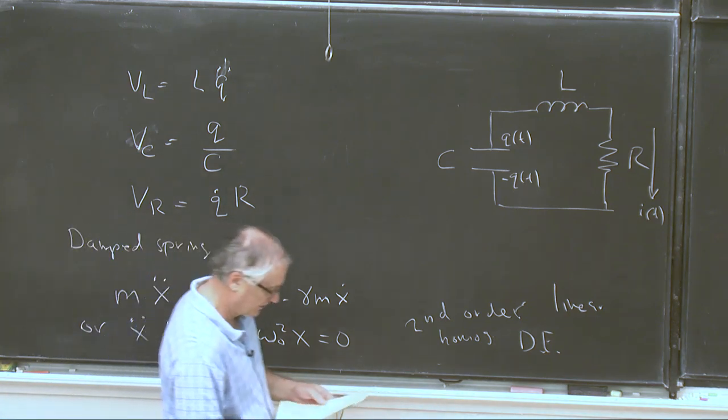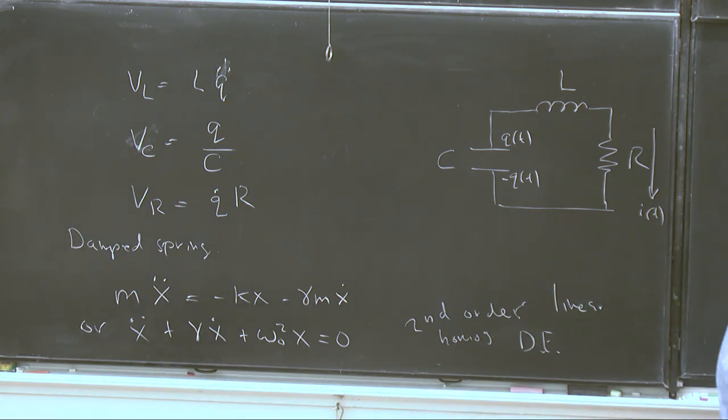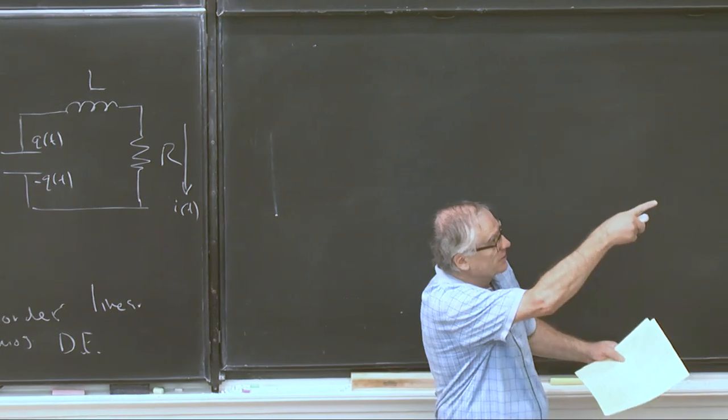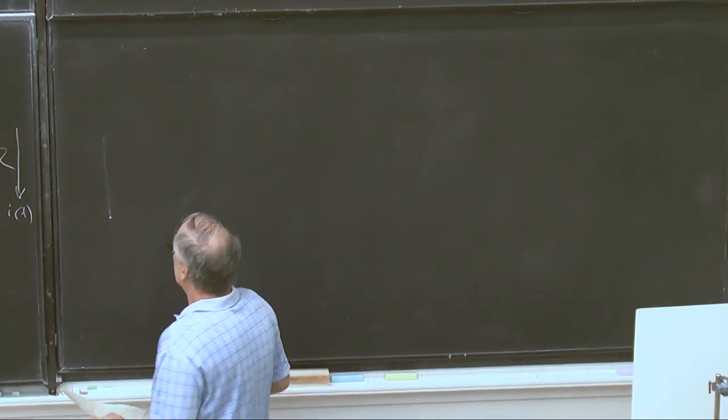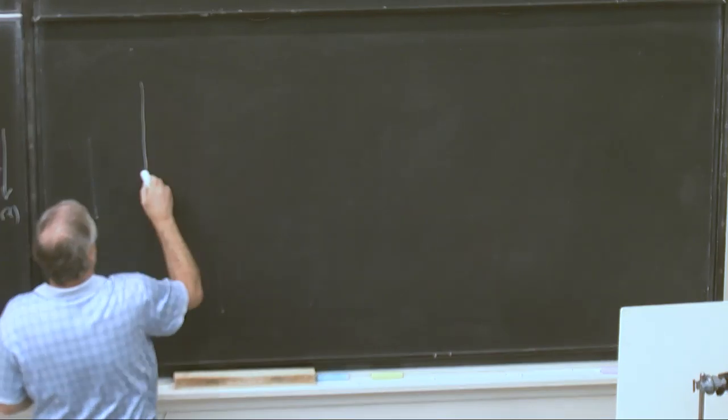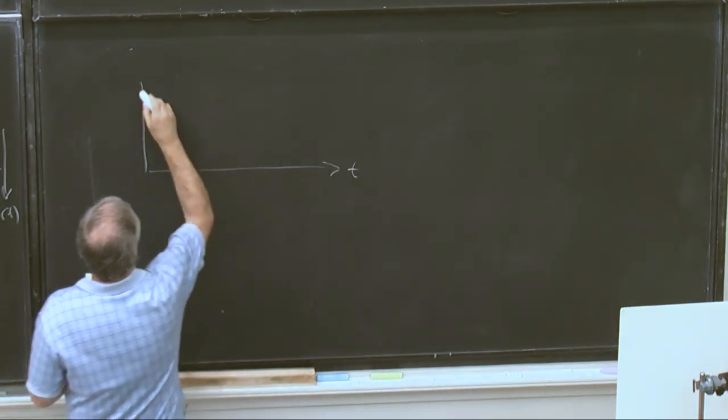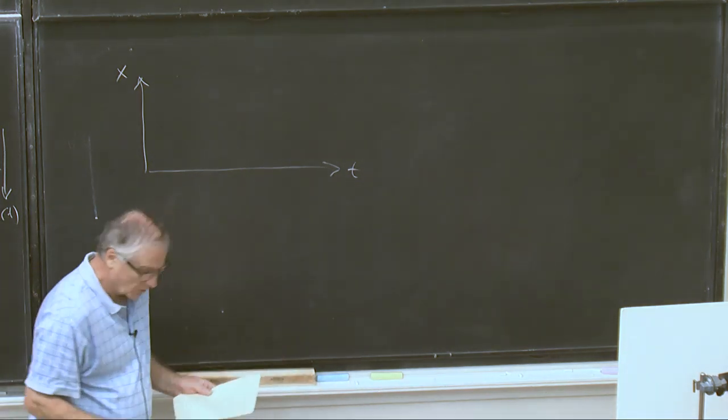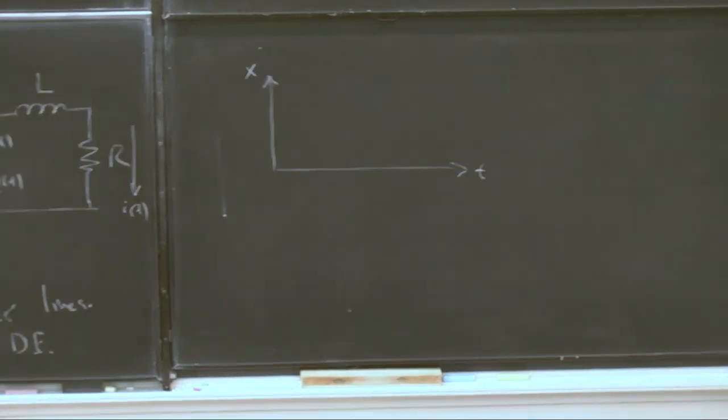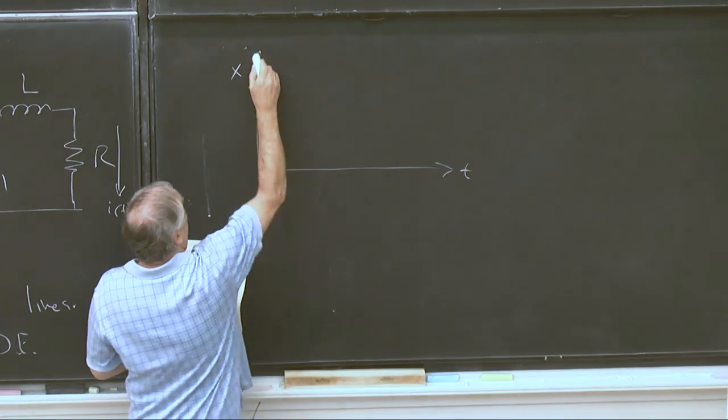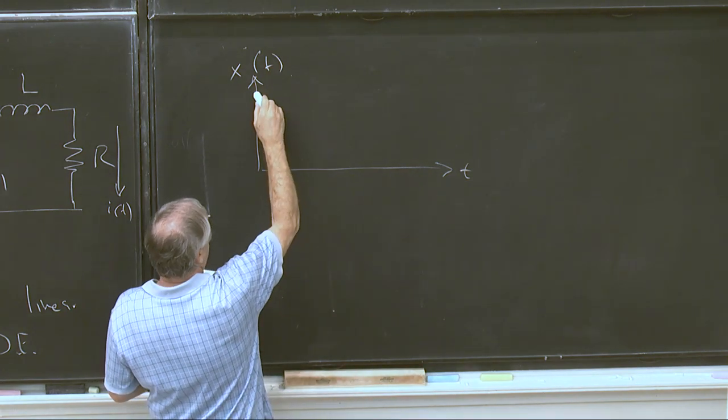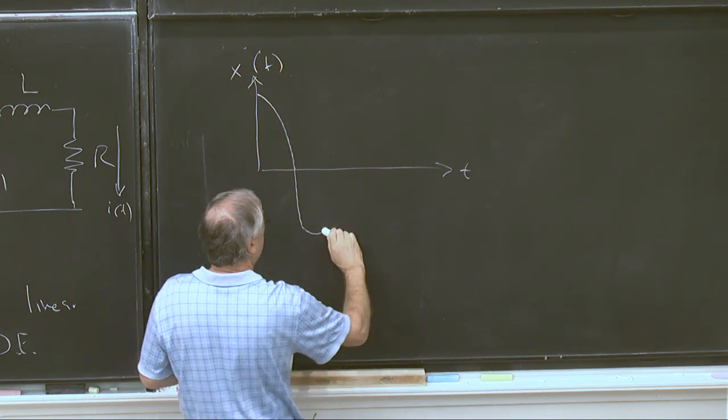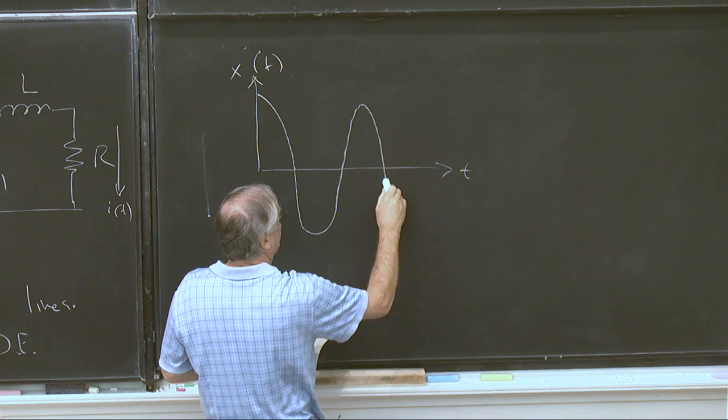Just like it was without the gamma there. We've just added a term proportional to the velocity. So what's the solution to that equation going to look like? Well, we've already seen, I mean, there's a graph of the solution, okay? So as a function of time, we expect x to be, well, what? So x is a function of time. Some initial condition, maybe up here, and there's some sinusoidal variation that dies out with time.